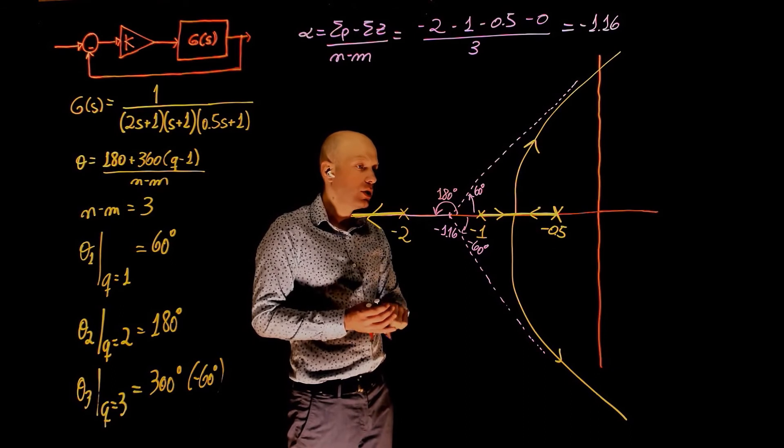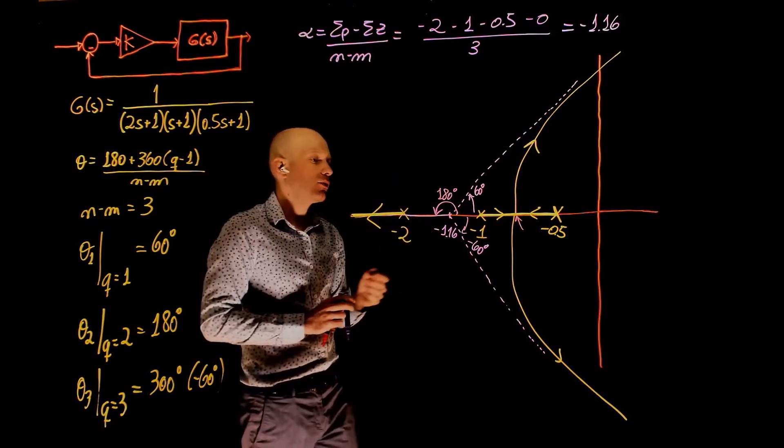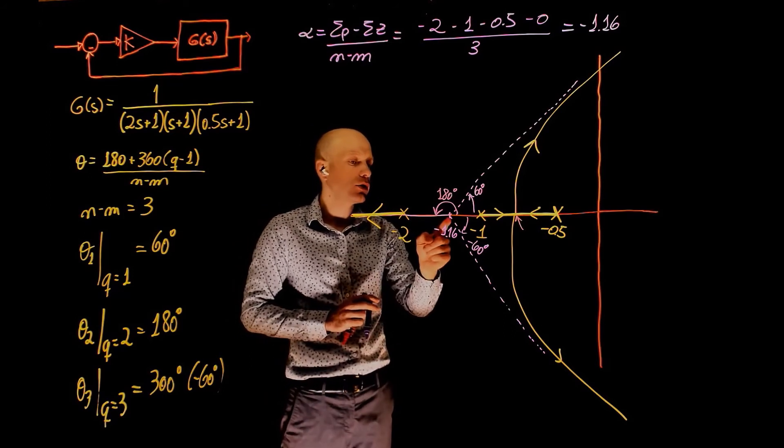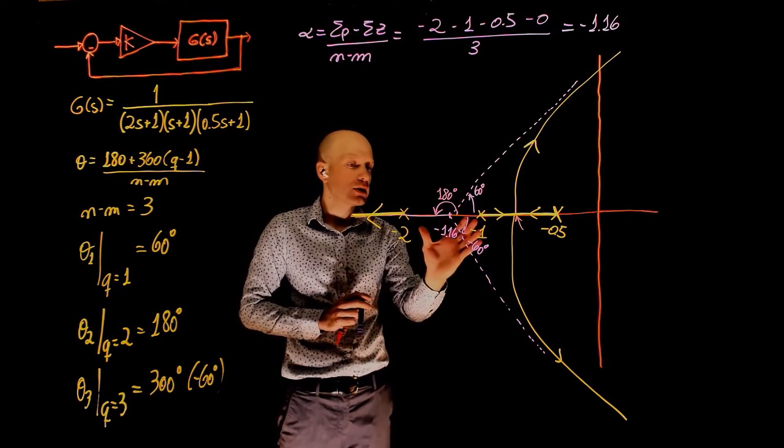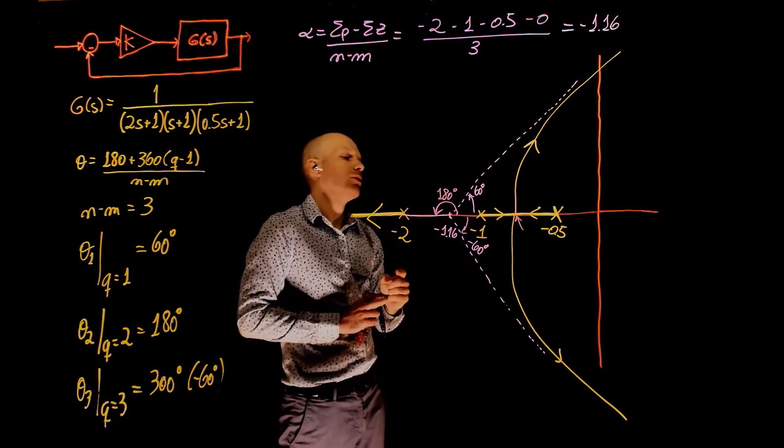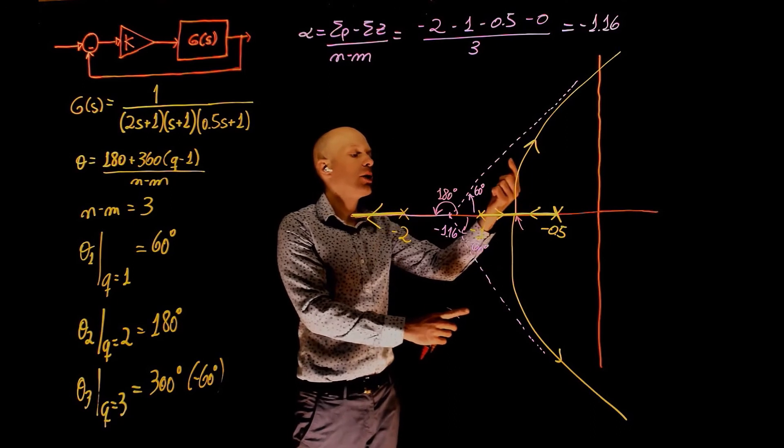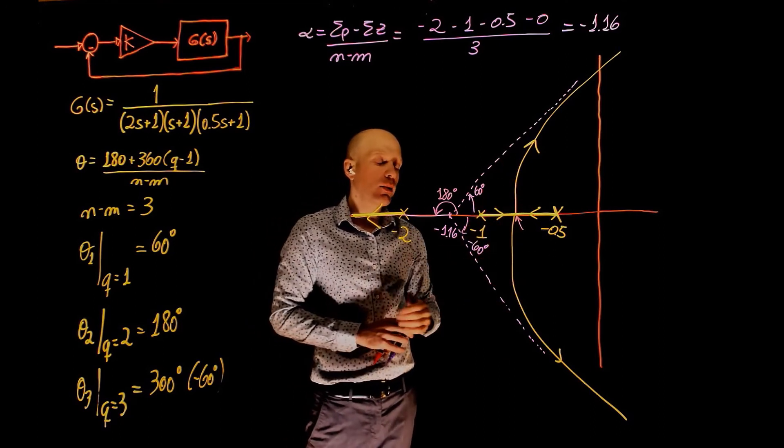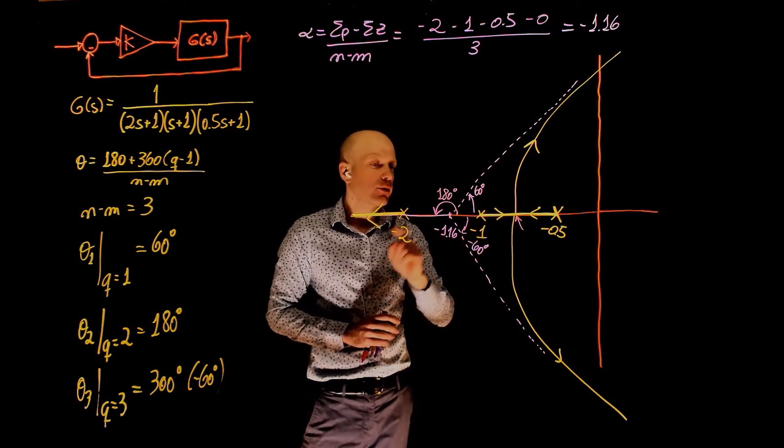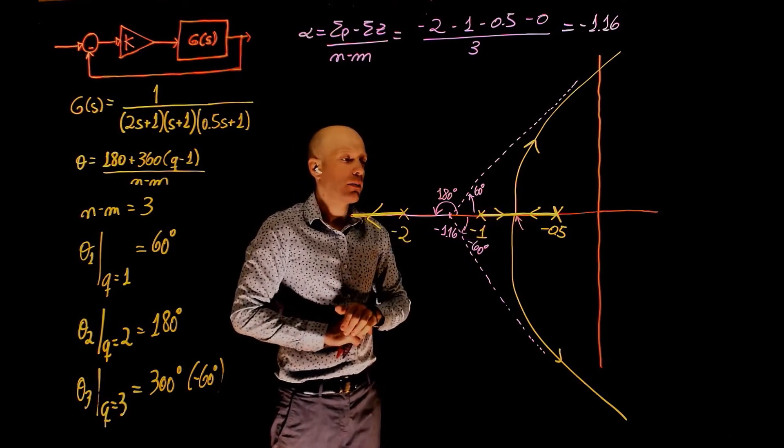Now notice something very important here: this breakaway point is not the centroid of the asymptotes. In fact, the centroid of the asymptotes in this example is outside of the root locus. It's right here. There is no root locus here. The point where these two poles come together and break away to the imaginary axis is called the breakaway point. It's different from the centroid of the asymptotes. And this point will be calculated in the upcoming lecture.